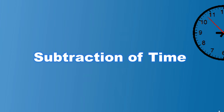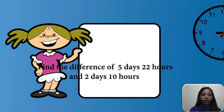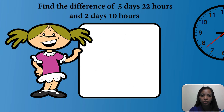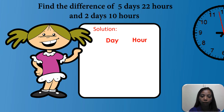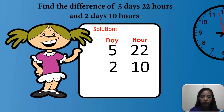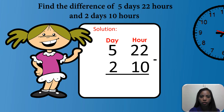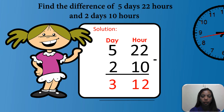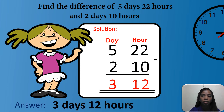Subtraction of time. First example in subtraction. Find the difference of five days, 22 hours and two days, 10 hours. Write the two units, day and hour. We have five days and 22 hours, minus two days and 10 hours. Let's solve the hours first: 22 minus 10 equals 12. Then the days: five minus two equals three. So the final answer is three days and 12 hours.